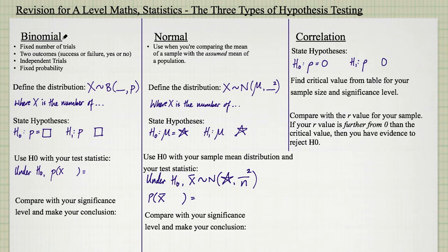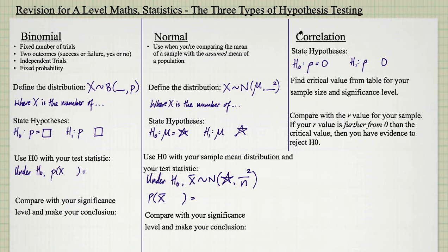We've got hypothesis testing with the binomial distribution, which is the year one topic. And then in year two, you see hypothesis testing using the normal distribution, and also hypothesis testing for correlation.